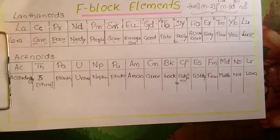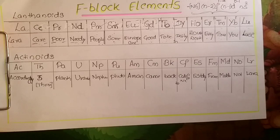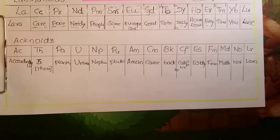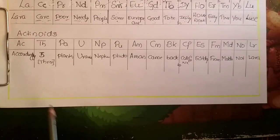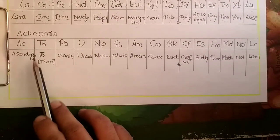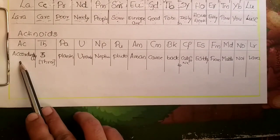Similarly for the actinoids, the actinoid elements are actinium, thorium, protactinium, uranium, neptunium, plutonium, americium, curium, berkelium, californium, einsteinium, fermium, mendelevium, nobelium, and lawrencium. The way to remember is: the sea for actinium.